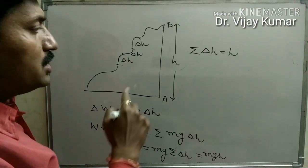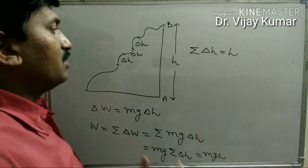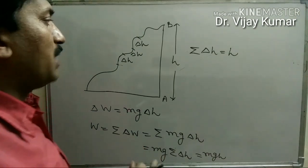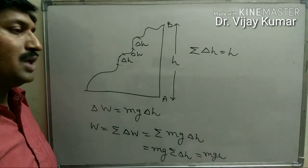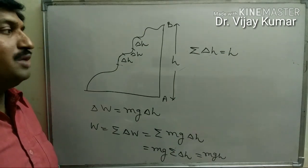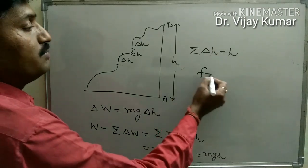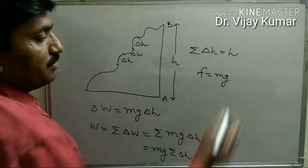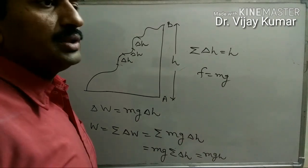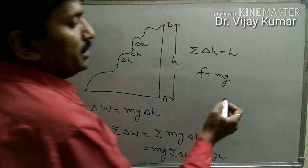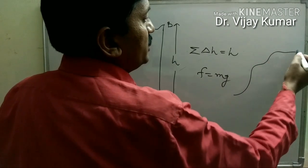In all three situations, work done is MgH, which shows that the force applied on the body is the same in all situations. This force is conservative, which is mg. The work done by a conservative force in moving a body in a complete round trip is always equal to zero.